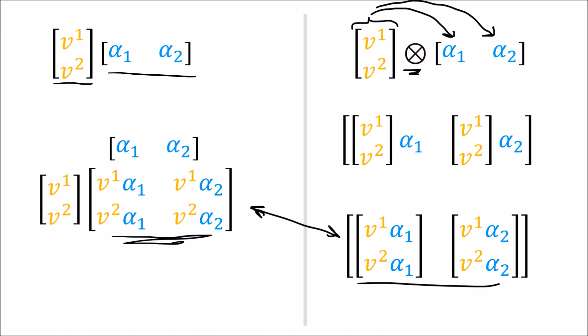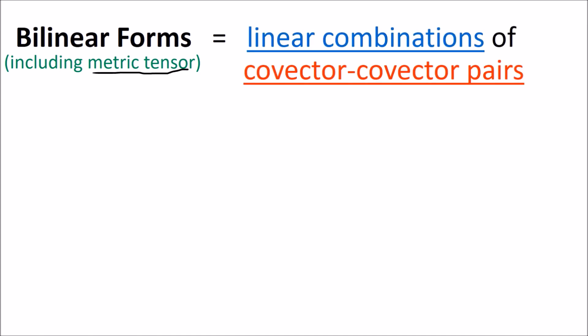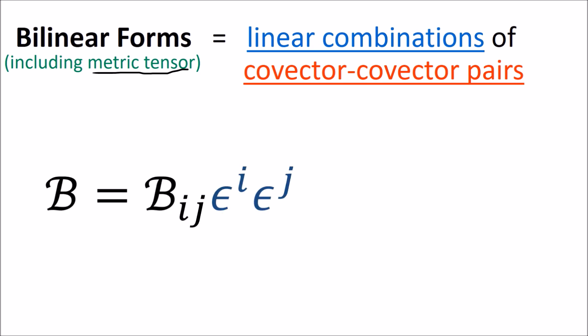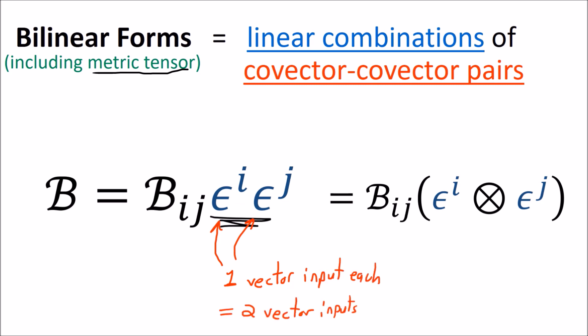That summarizes how our perspective change on linear maps gave us a bunch of benefits. Now we're going to go through a similar perspective change for bilinear forms — which includes the metric tensor — and view bilinear forms as linear combinations of covector-covector pairs. Why covector-covector pairs? Because bilinear forms take two vector inputs, and since covectors take one vector input each, a pair of covectors would take two vector inputs, which is a hint we're on the right track.